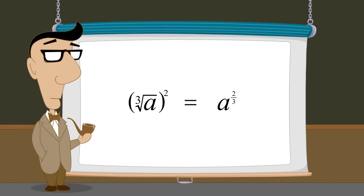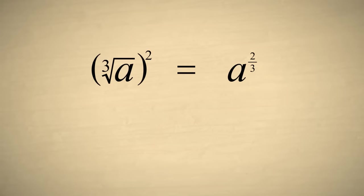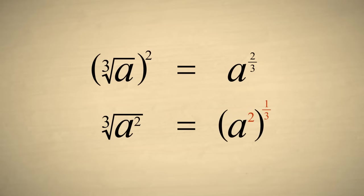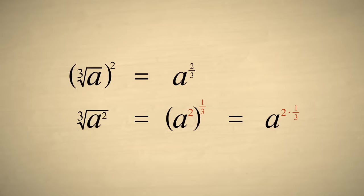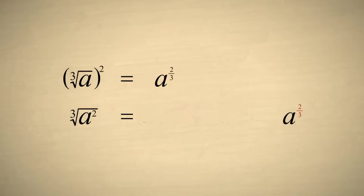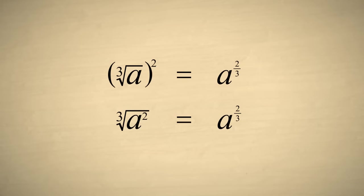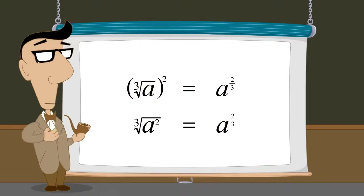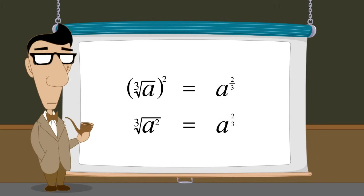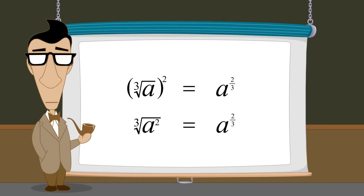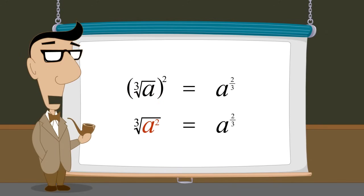However, we could have also come up with a to the two-thirds in a different way. Instead of squaring the cube root of a, we could have first squared a, and then taken the cube root. Using exponents, this would be written as a squared to the one-third power. And multiplying the exponents, once again, we get a to the two-thirds power. So in both cases, we get a to the two-thirds power, regardless of whether we start by taking the cube root of a and then squaring it, or start by first squaring a and then taking the cube root.